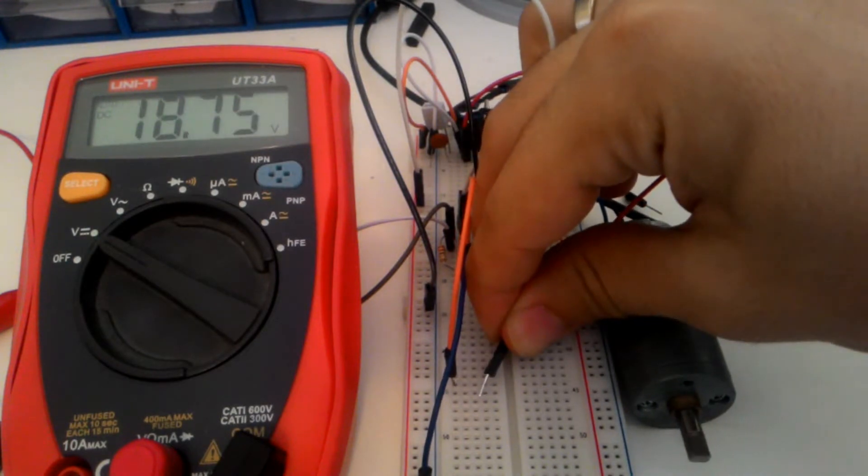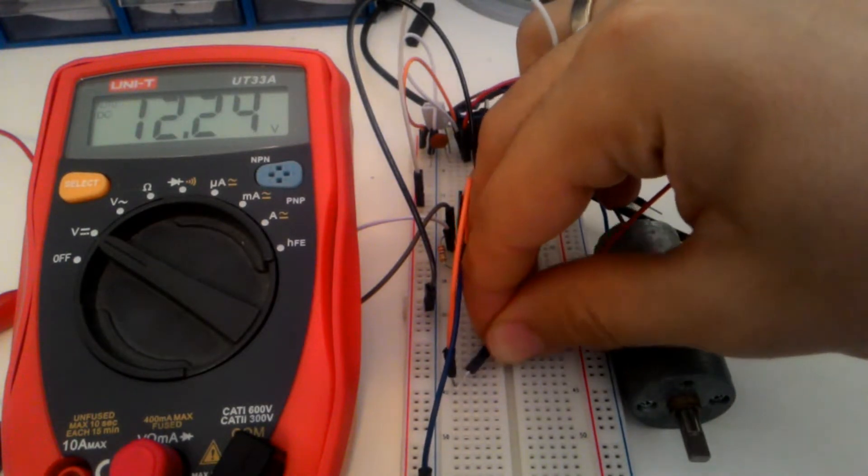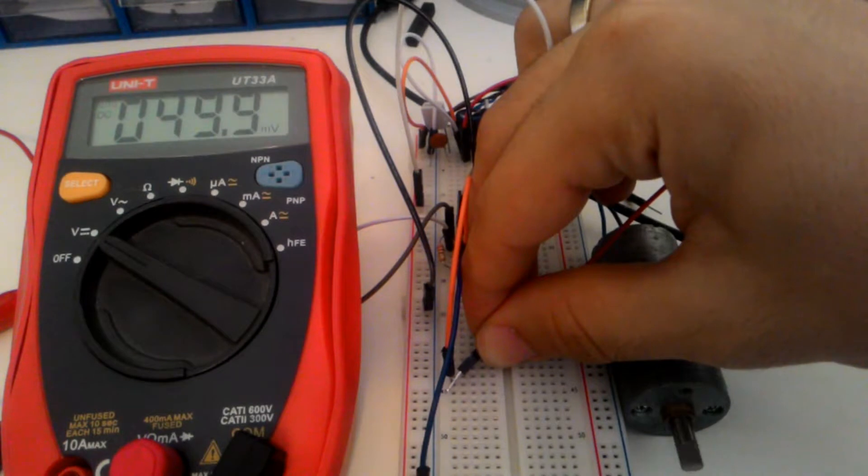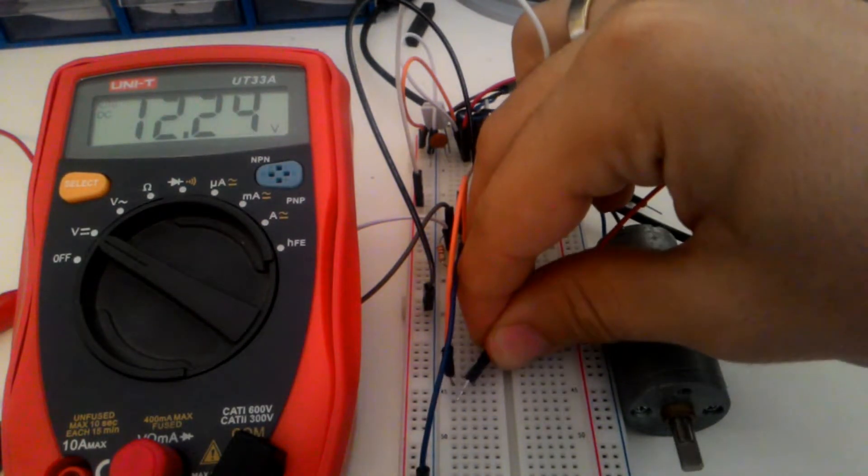Here I'm switching a transistor on and off, which drives and stops an electric motor. You can see the increase of voltage in the multimeter.